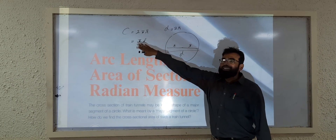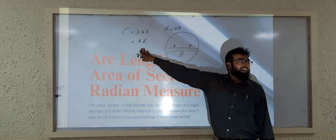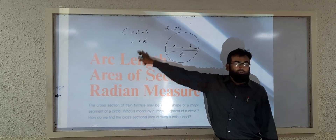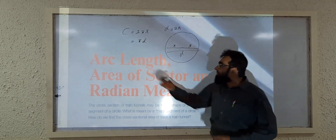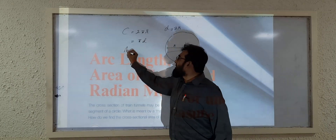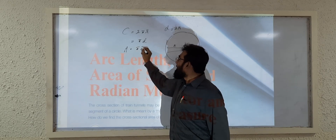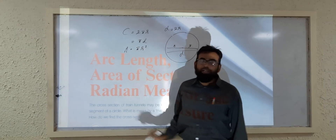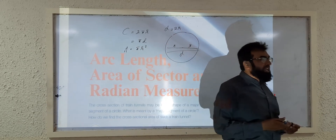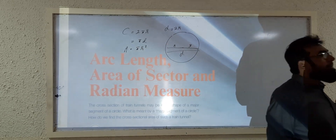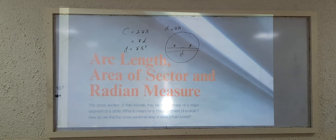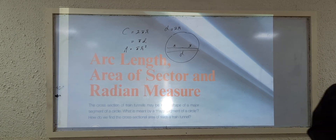This is the formula to find the circumference of the circle, and the area of a circle is equal to πr². So area of circle = πr². These are the formulas we are going to use here.